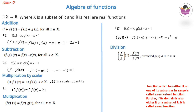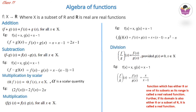For division: (f/g)(x) = f(x)/g(x), provided g(x) ≠ 0. Example: with f(x) = x and g(x) = x − 1, then (f/g)(x) = x/(x − 1).